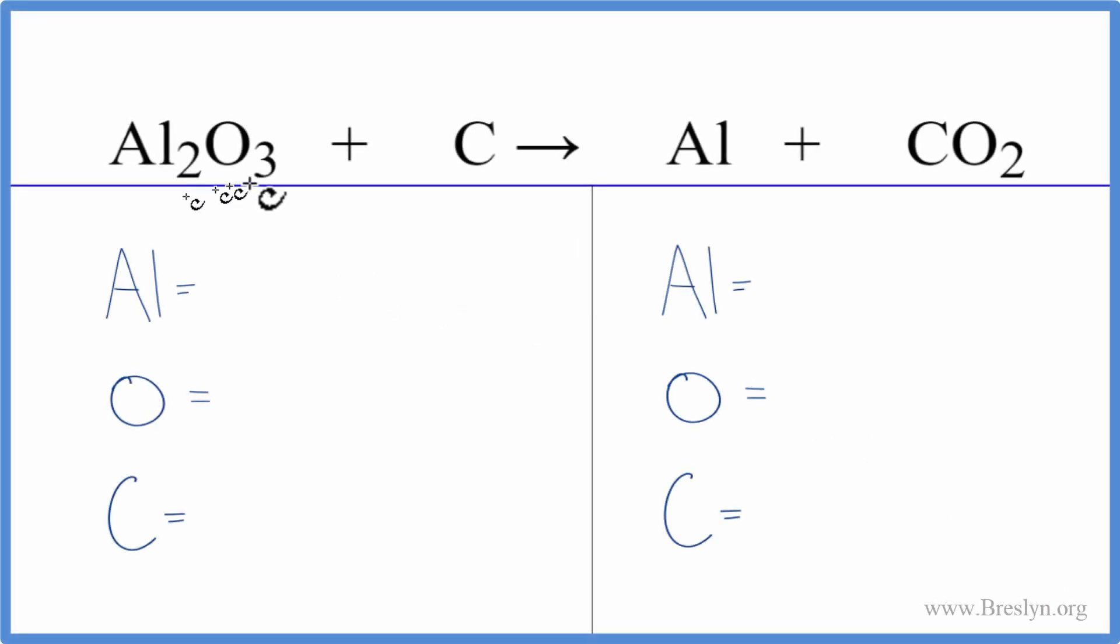In this equation, we have aluminum oxide plus carbon, Al2O3 plus C. So let's count the atoms up on each side and then balance the equation. Two aluminum atoms, three oxygens, and just one carbon.